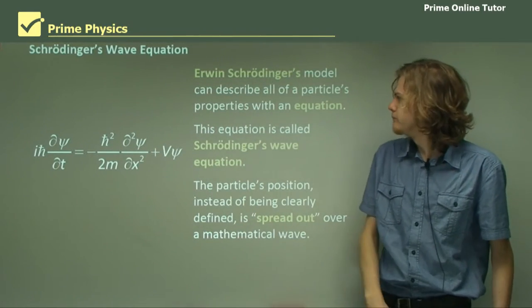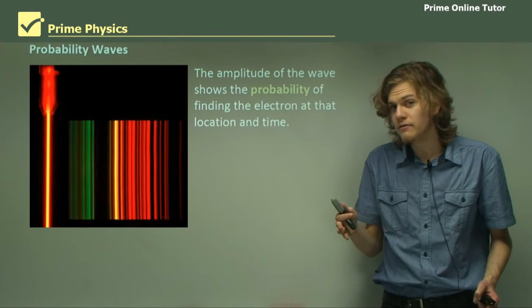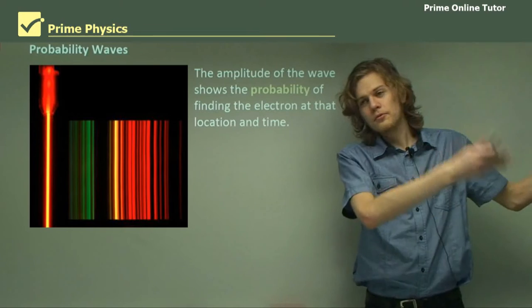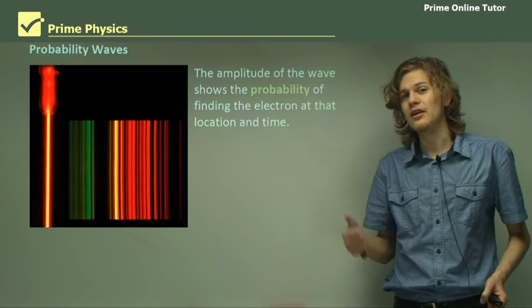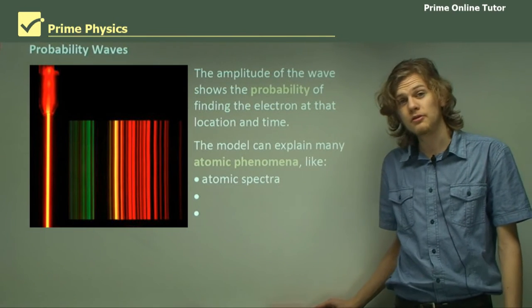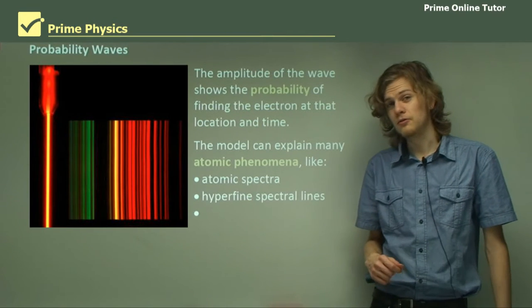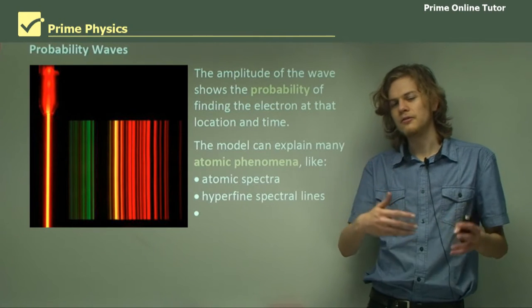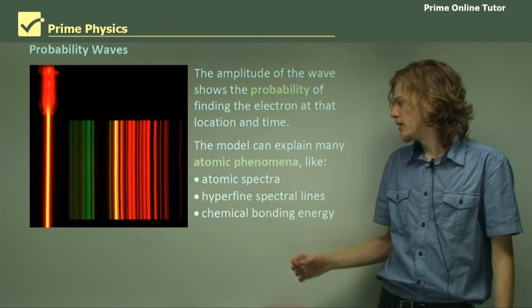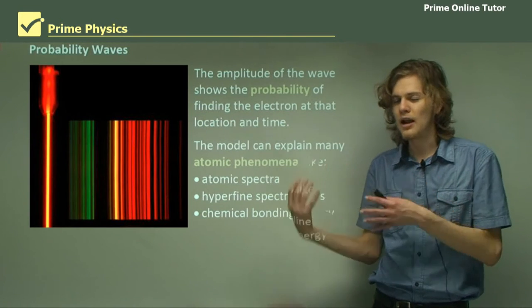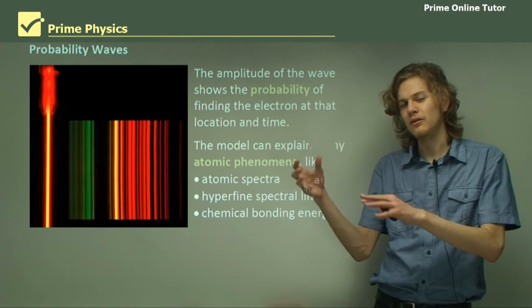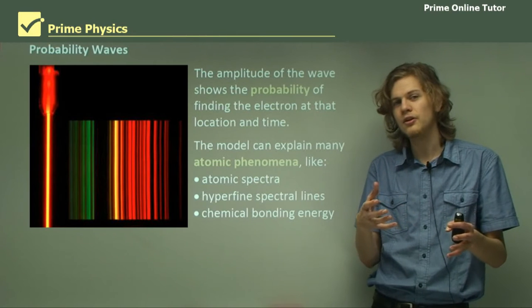The amplitude of the wave shows the probability of finding the electron there — the higher up the wave is, the larger the chance that the electron is there. This model was able to explain a number of things: it was able to explain atomic spectra, hyperfine spectral lines, because the different electrons in the different energy levels had slightly different energy due to the wave equation. And it was able to explain the chemical bonding energy — the energy that it takes for one atom to bond with another — based on how the Schrödinger wave equations of the different electrons interacted with each other.